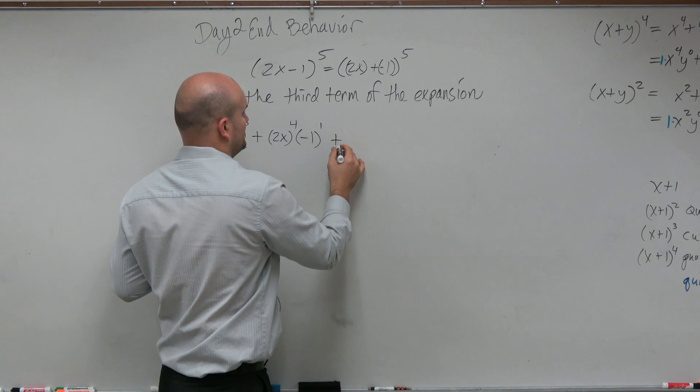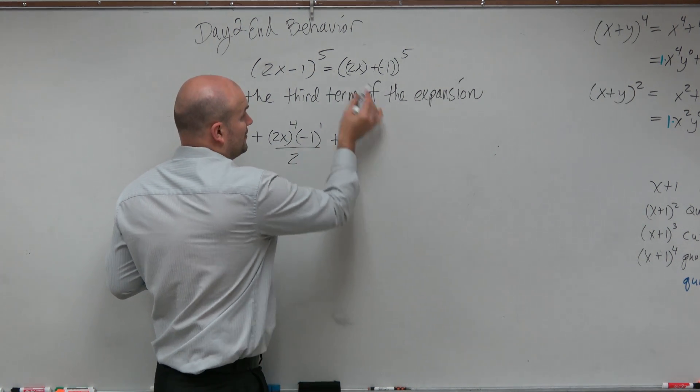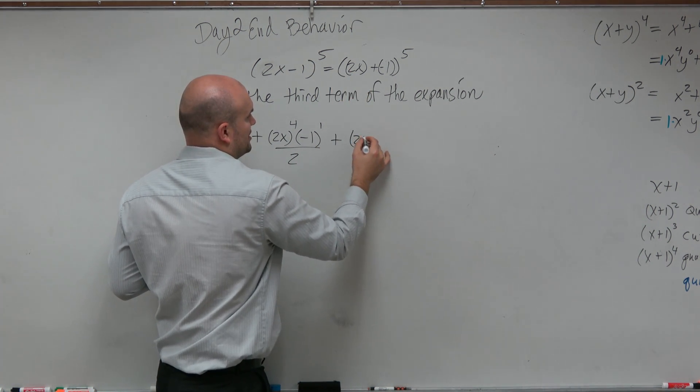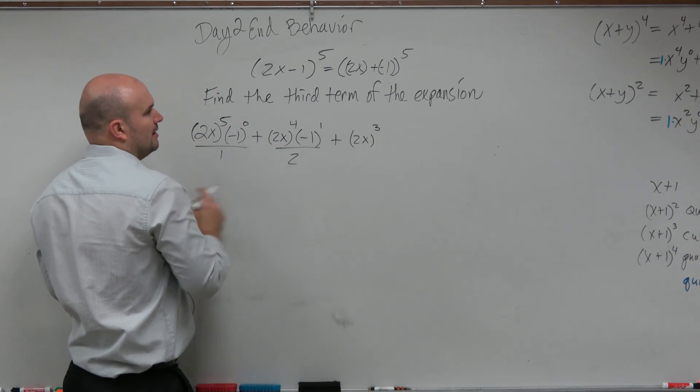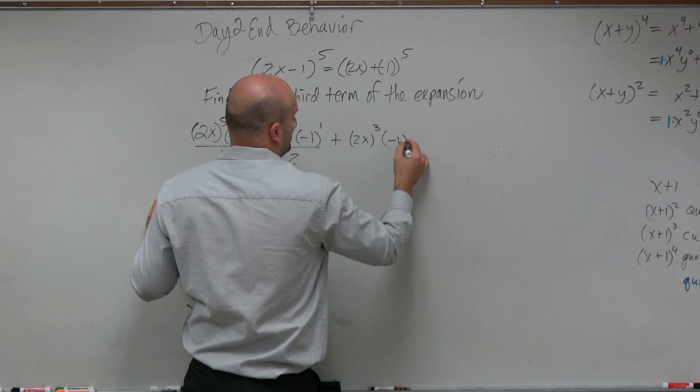Then we're going to go to, that's the second term. The third term is going to be the first term, 2x raised to the 3rd power, and then this is going to be negative 1 squared.